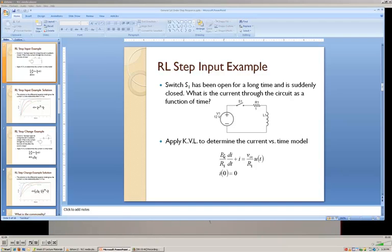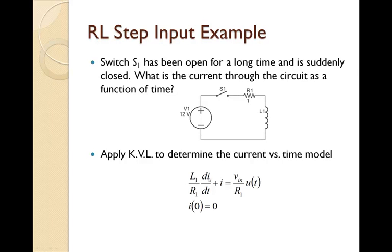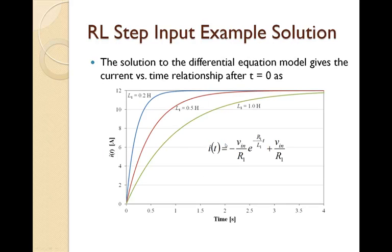This matches the step input example from the slides, where we derived the same differential equation with initial condition by applying Kirchhoff's voltage law around the loop and solved it to get the same result. We see that the current starts at zero and slowly approaches a final steady-state value depending on the circuit parameters.